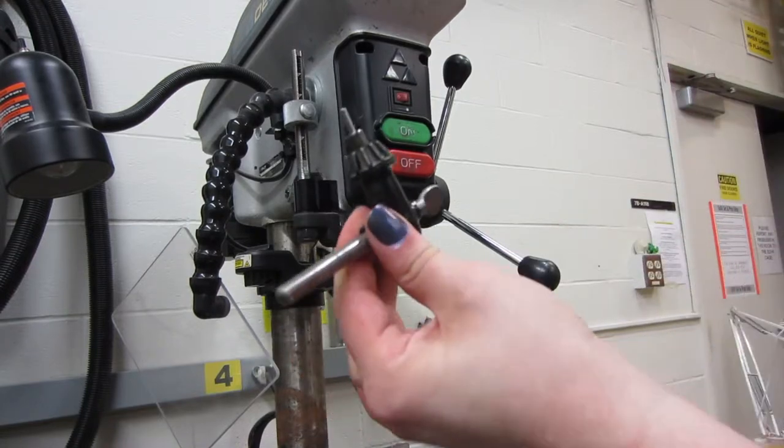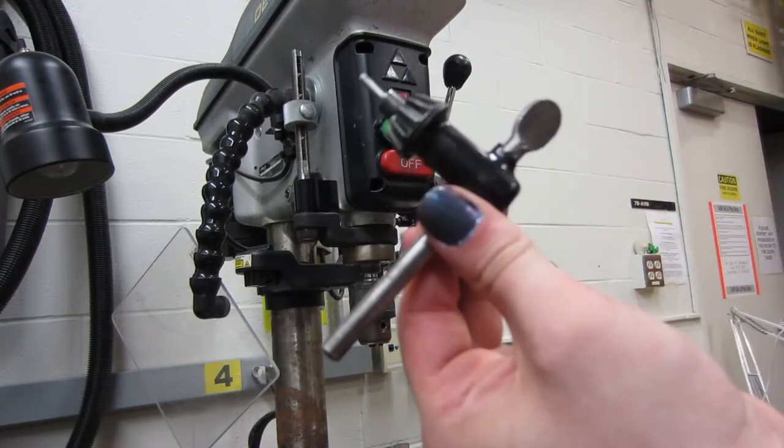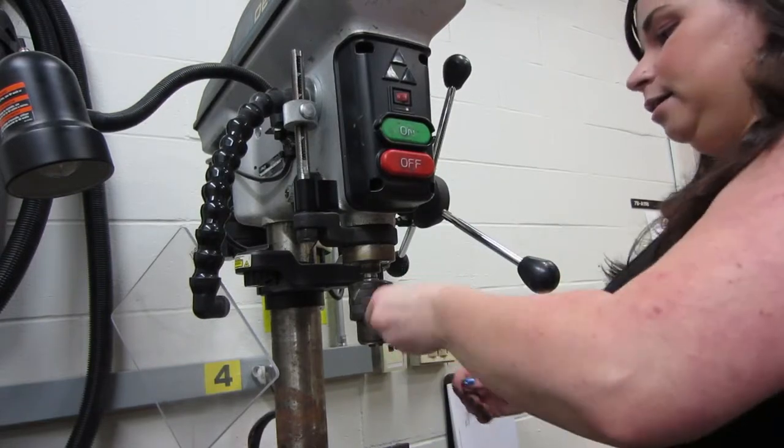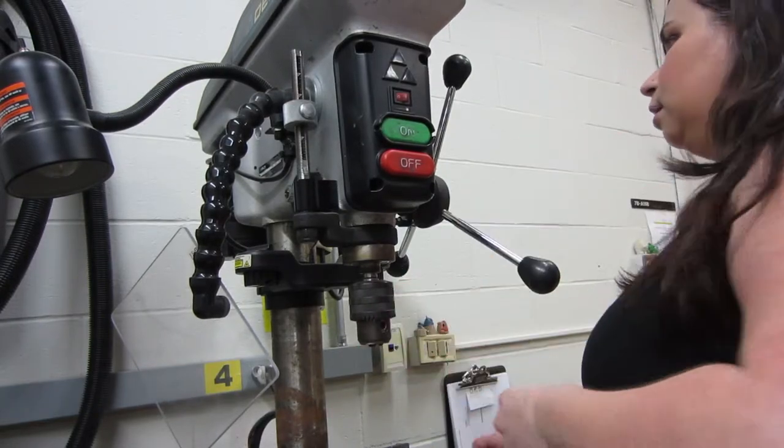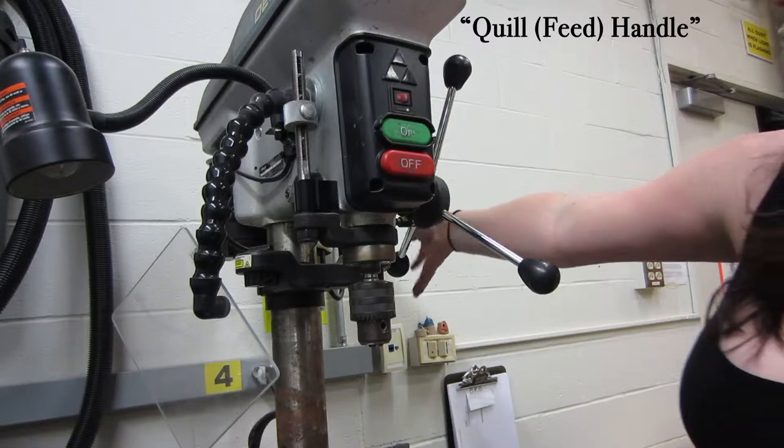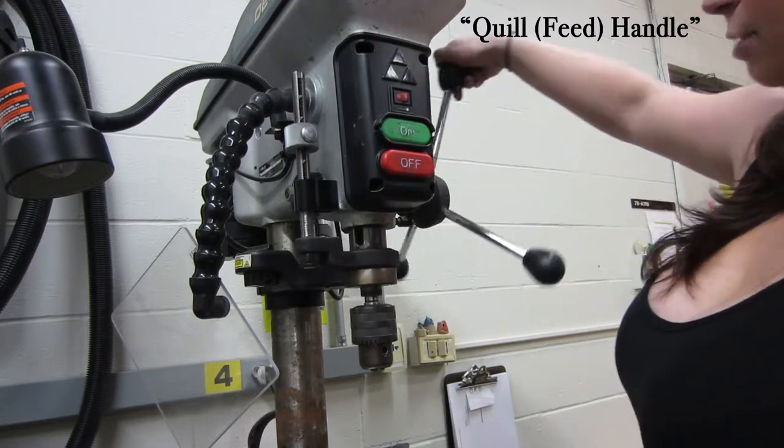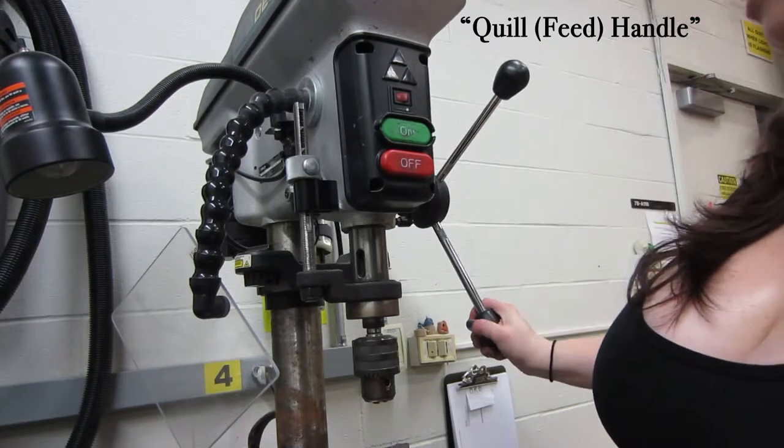So you've got a chuck, or a chuck key, sorry. This is the chuck key which goes into the chuck and helps you open and close the chuck. And then this is your wheel, so basically you're grabbing this and bringing the drill bit slowly down into your wood.